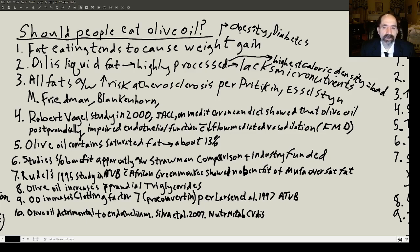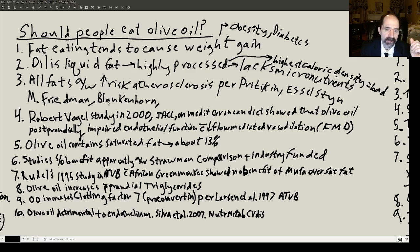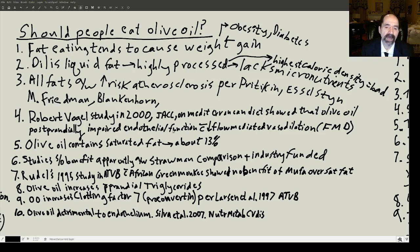All fats increase the risk of atherosclerosis — based on research of Nathan Pritikin, Caldwell Esselstyn, Meyer Friedman, and Blankenhorn. Blankenhorn did cardiac catheterizations on these patients and it didn't matter what type of fat they were eating — they were just getting worse atherosclerosis. Robert Vogel, a famous cardiologist who uses the brachial artery reactivity test for endothelial function, studied the Mediterranean diet and found that olive oil postprandially — just after eating — impaired endothelial function. The artery was less able to vasodilate afterward; he called it a decrease in flow-mediated vasodilation. He concluded the benefit of the Mediterranean diet comes from the fruits and vegetables, not the olive oil.